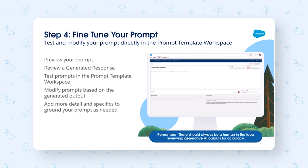In the Prompt Builder workspace, you have the ability to test and preview your prompt and generated response. You can quickly modify your prompt, save and use prompt template versions, and even change your large language model configurations. Once you're pleased with the results you're seeing in your preview window, you can move to testing and deploying your prompt. But remember, even if your prompt looks perfect in Prompt Builder, there always needs to be a human in the loop reviewing all of your generative AI outputs for accuracy.